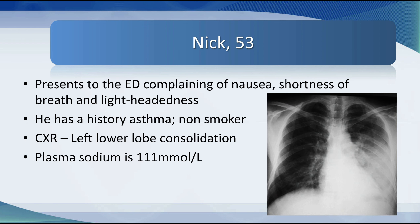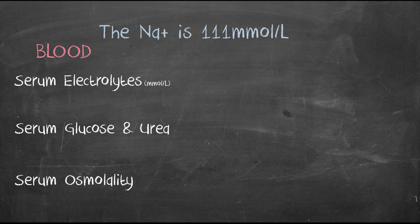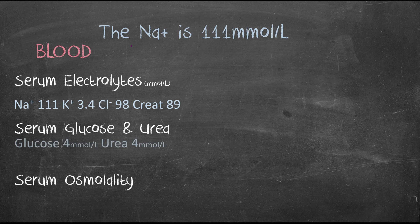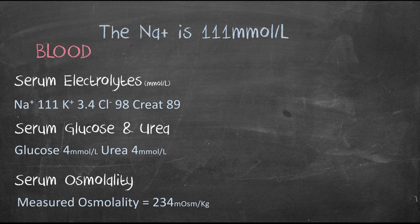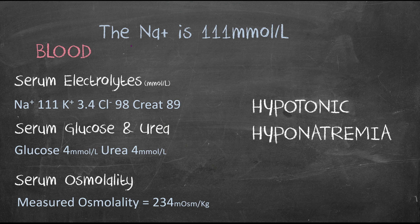On his labs his plasma sodium is 111 millimoles per liter. His electrolytes: sodium 111, potassium 3.4, chloride 98, creatinine 89. His glucose and urea are both normal at four millimoles per liter each, and his measured osmolality is 234 milliosmoles per kilogram with no osmol gap. So this is hypotonic hyponatremia.